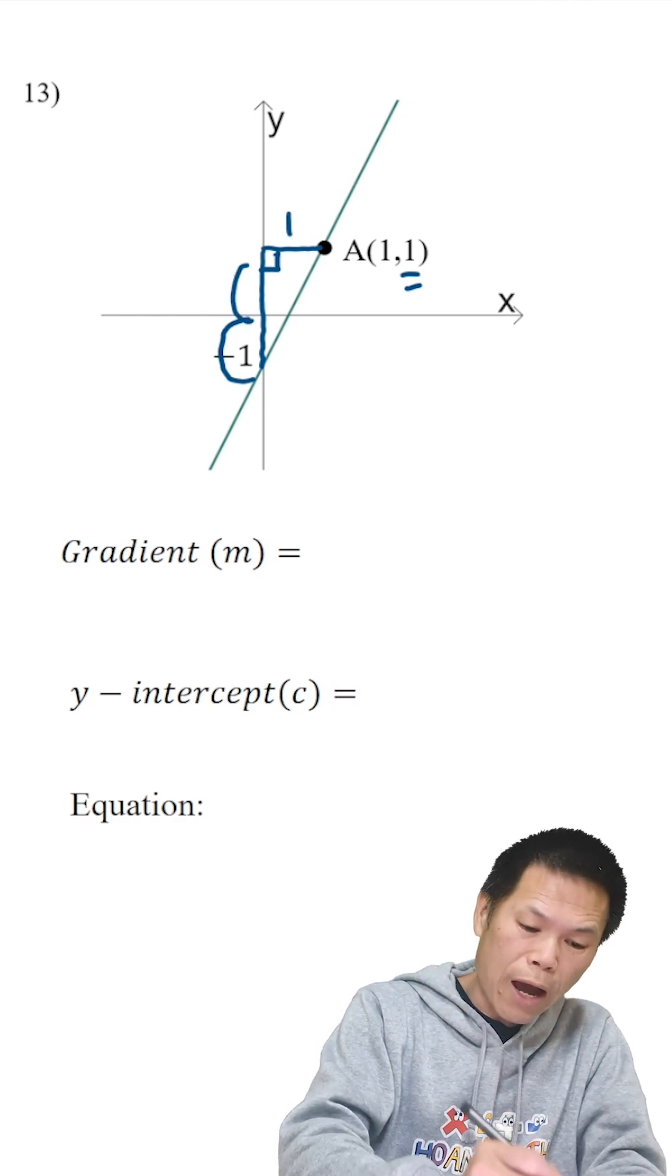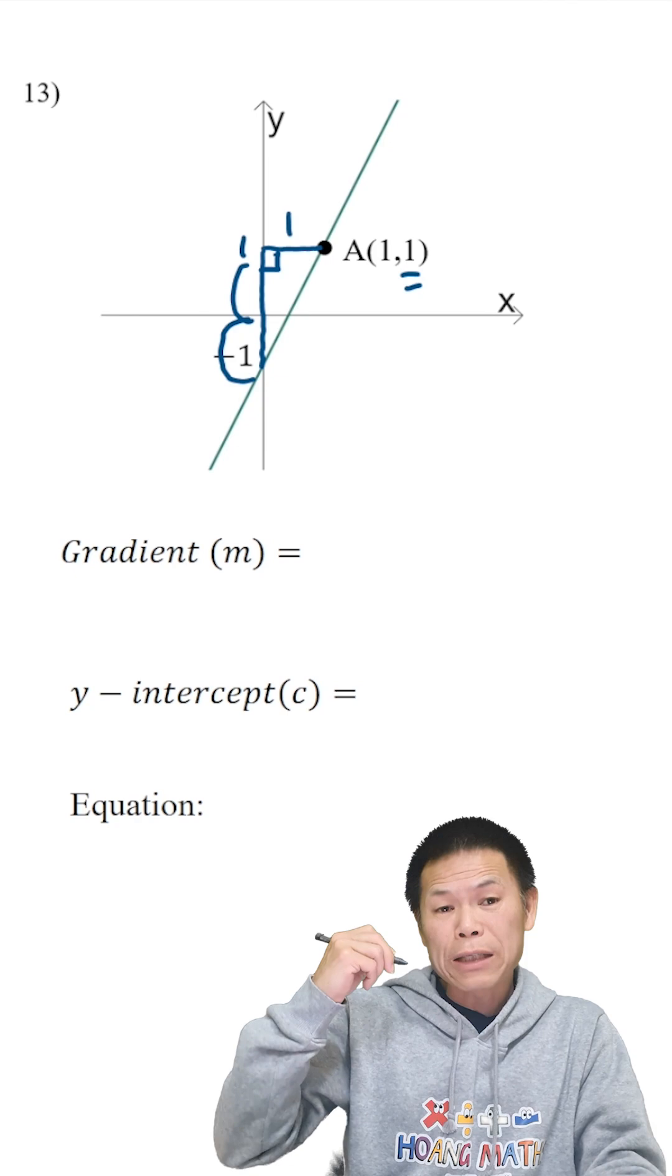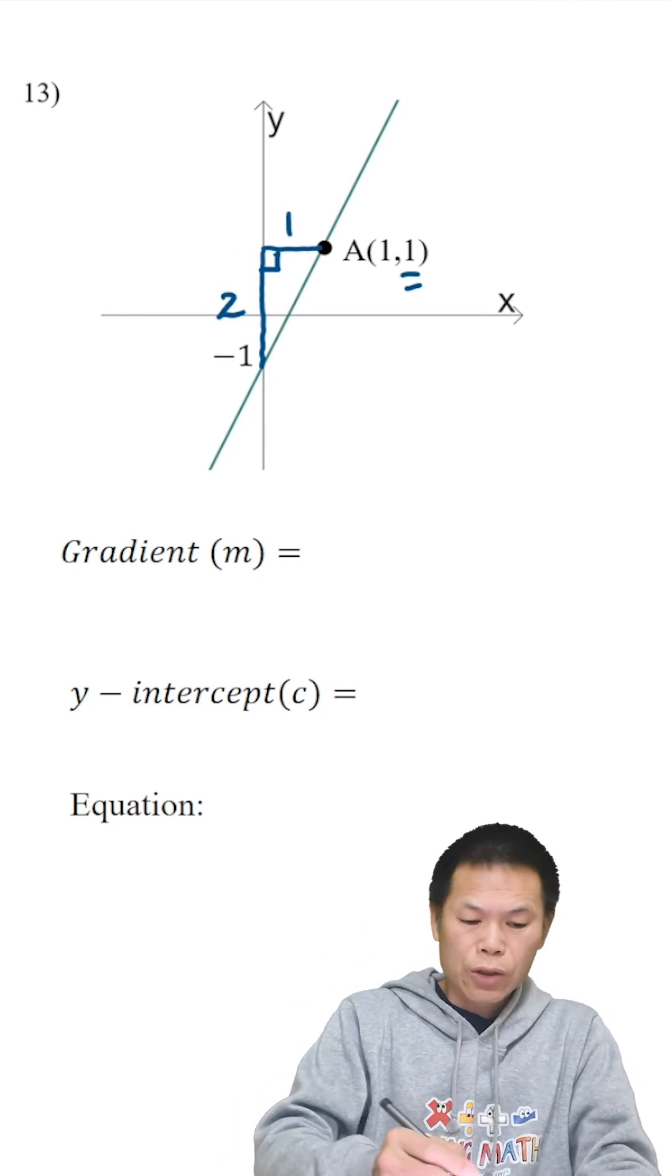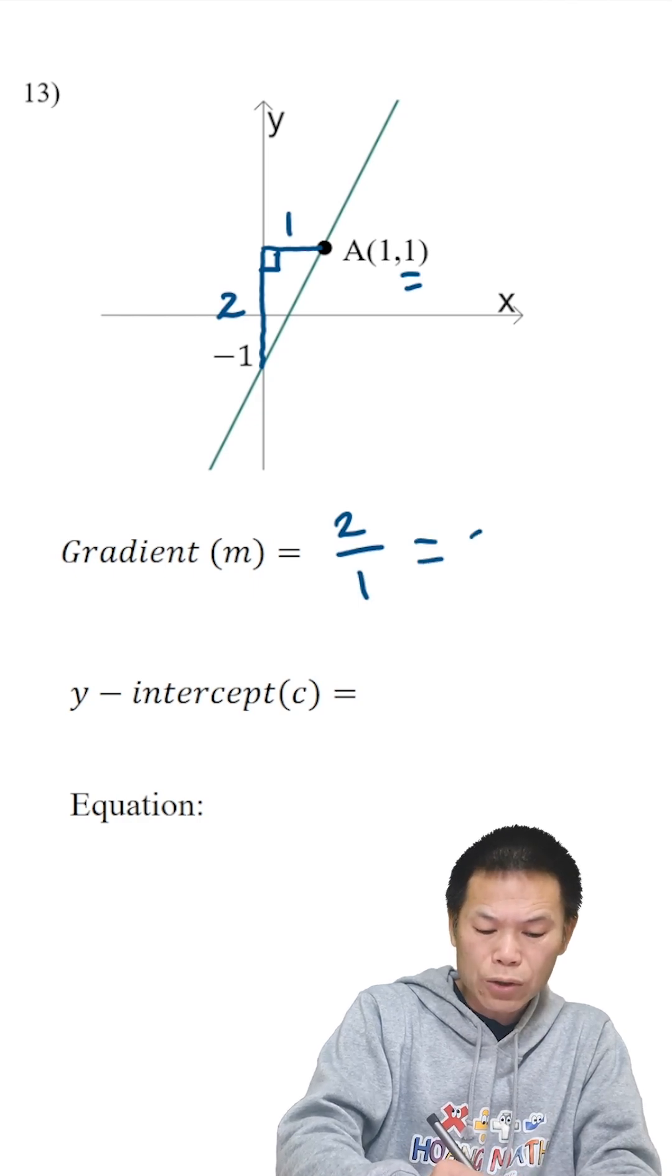And from 0 to 1, because the y value is 1, this 1 here. So 1 plus 1 is 2. So this is 2. The rise is 2. Run is 1. So the answer is 2.